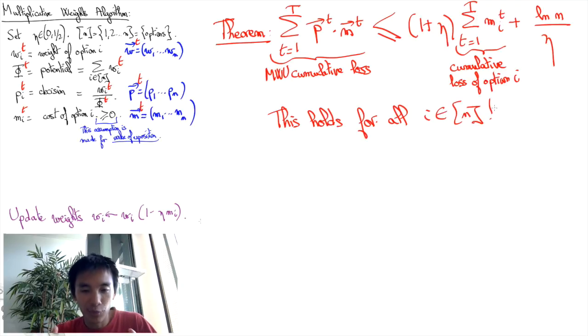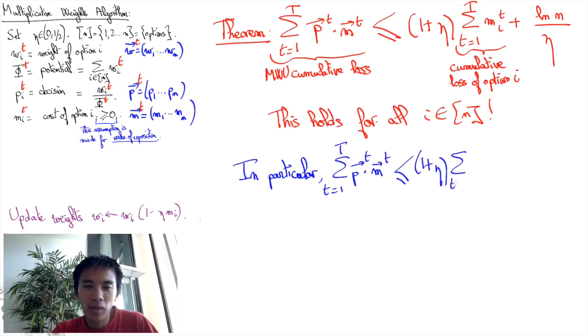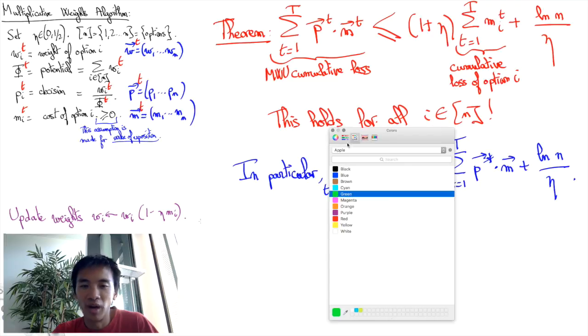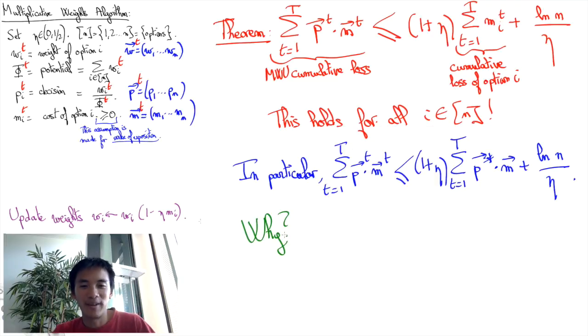This inequality is really remarkable. Even if the constant eta is poorly chosen, we see that we almost retrieve the cost of the best possible decisions p* we should have chosen for all rounds, with the multiplicative error less than 1 plus eta, and an additive error term that is of the order of the logarithm of the number of options. How could that be?